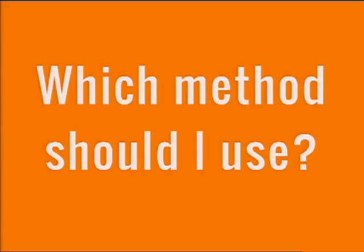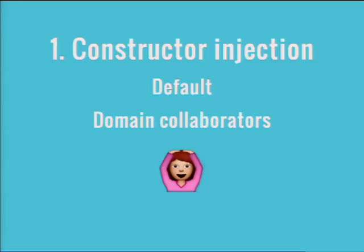So you might ask which method should I use. Constructor injection should be your default. Definitely use it for what I'm calling domain collaborators. If you're like the token module and there's a token storage class, those are both sort of in the same domain — you have a high cohesion with that class, you probably want to inject that.